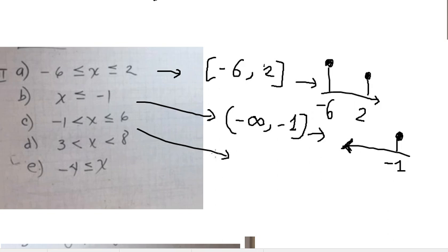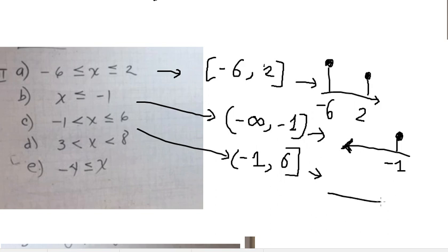For this one, we write a parenthesis at negative one to a square bracket at positive six. The graph should look like this.